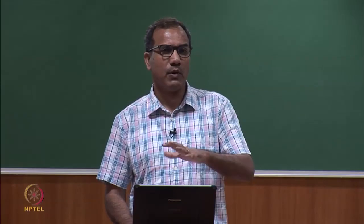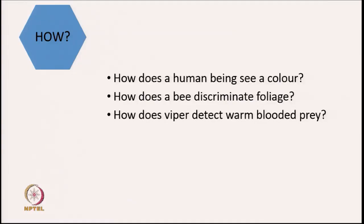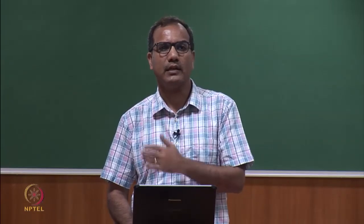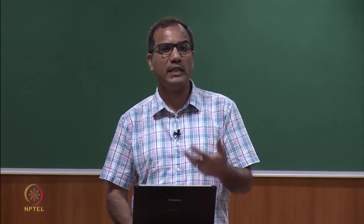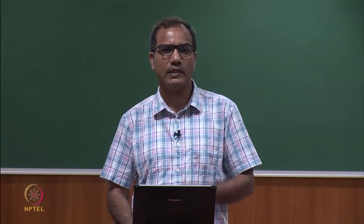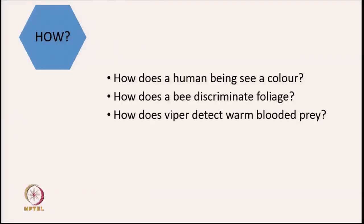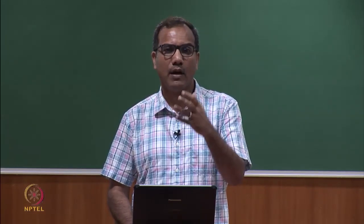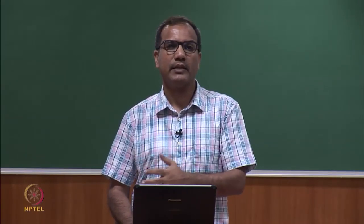Now, coming to the 'how' questions: how does a human being see a color, why does a particular color look like that color to us — why does an apple look red or why do blueberries look blue. We will also ask how does a bee discriminate foliage, and how does a viper detect warm-blooded prey. These are questions related to spectroscopy, and we will discuss how a particular animal discriminates between two objects.